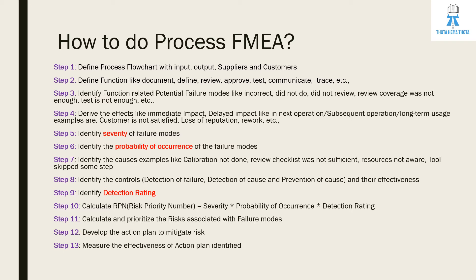We need to first concentrate on prevention of cause, then on detection of cause, and then find out the detection of failure and their effectiveness. Step nine is to identify the detection rating. Step ten is to calculate RPN — severity multiplied by probability of occurrence multiplied by detection rating. Step eleven is to calculate and prioritize risks associated with failure modes. Step twelve is to develop the action plan to mitigate risk. Step thirteen is to measure the effectiveness of the action plan identified.